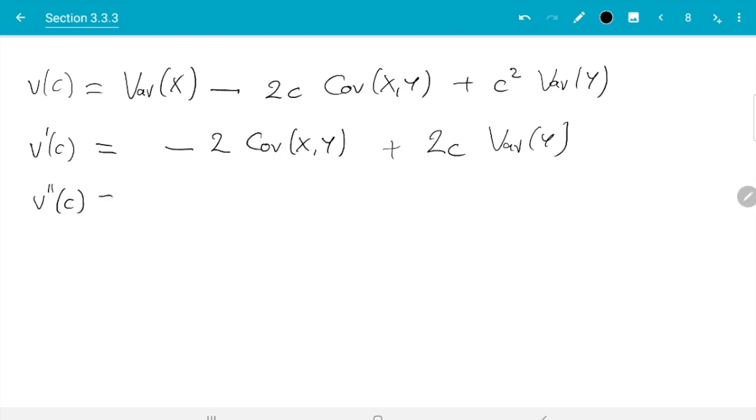Just let's do the second derivative to verify we are actually going to get a minimum. So the second derivative is 2 variance of y which is bigger than zero. And assuming y is not constant it's strictly bigger than zero. So what we will get will be a minimum which is what we hope for.